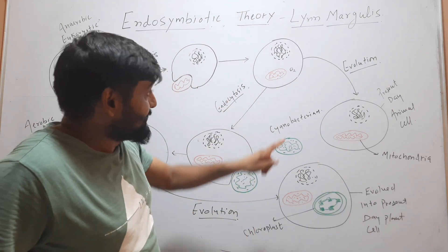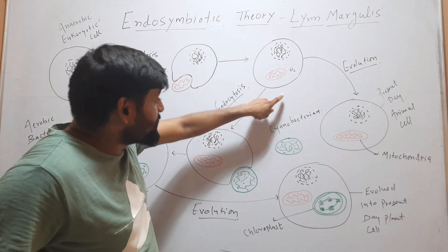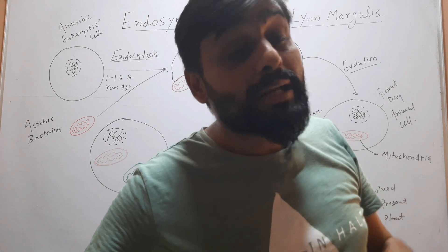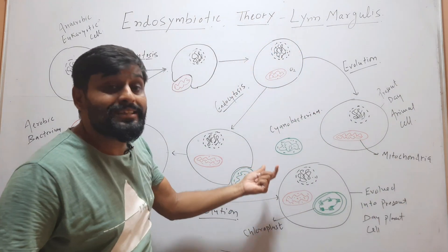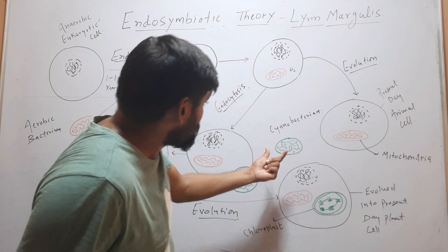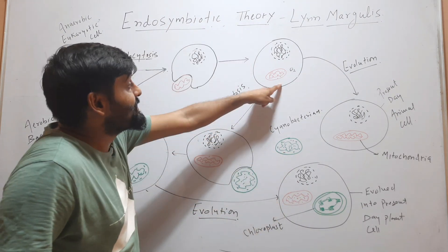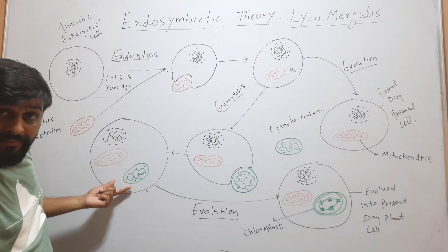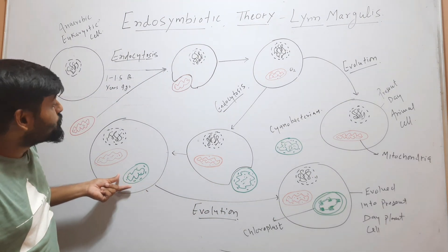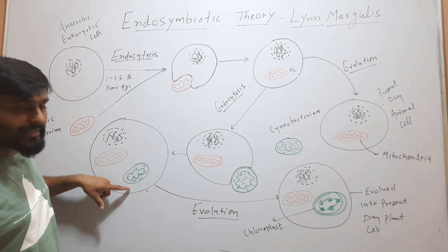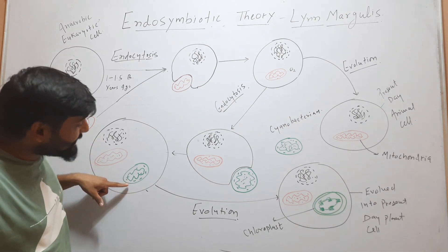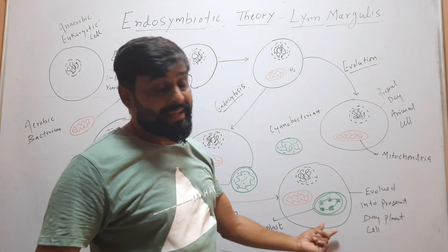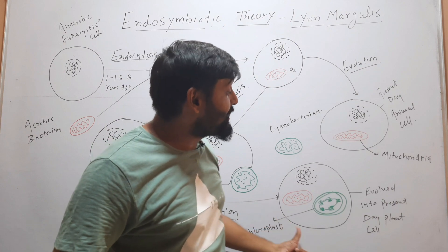Some of these anaerobic eukaryotic cells — the ones that had already engulfed aerobic bacteria — experienced a second endosymbiotic event. This cell engulfed cyanobacteria. Cyanobacteria is a bacterium that can photosynthesize, that can prepare its food in the presence of light, and that has chlorophylls. This cyanobacteria was engulfed by the cell and over time became part of it, providing food to the cell while the cell provided shelter to the cyanobacteria.